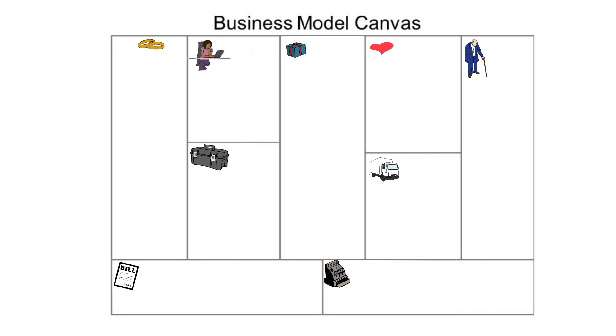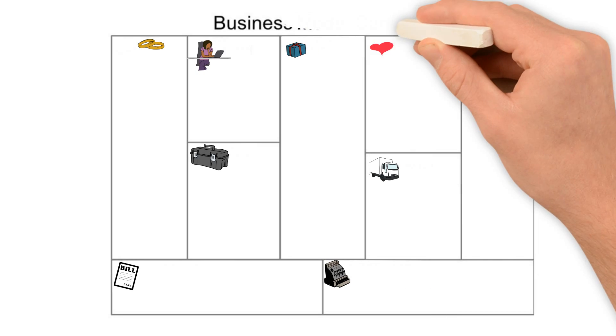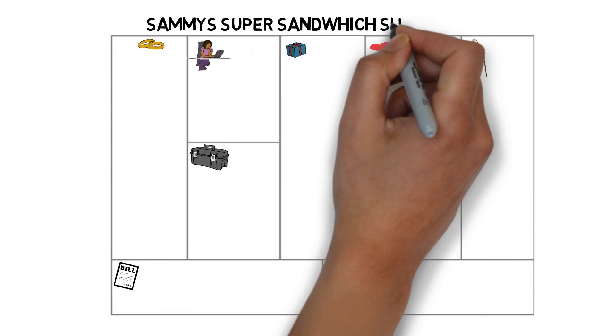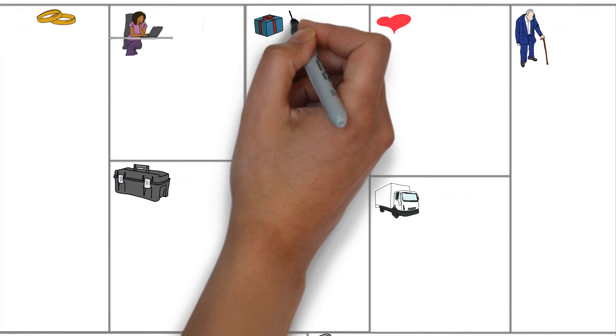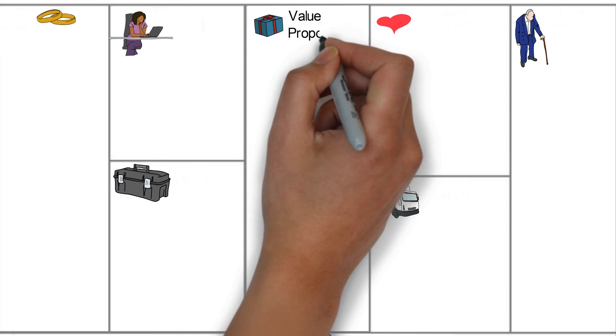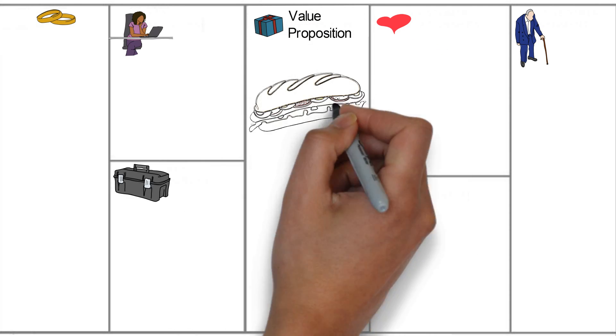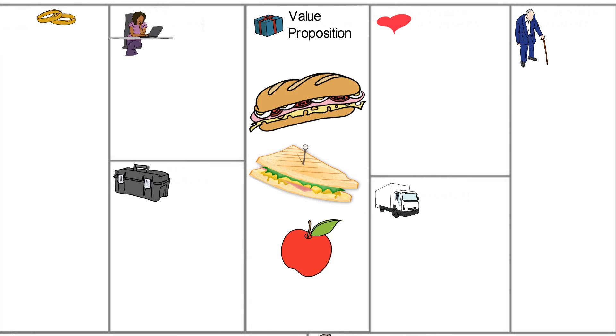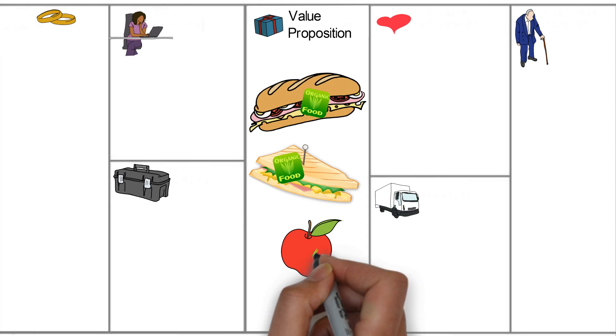Instead of going through something obscure like a tech business, let's just start with something simple like Sammy's super sandwich shop. Let's say Sammy is tired of eating at fast food joints because of their low quality food, so Sammy decides that this is what he wants to change and to provide people with great tasting organic sandwiches. This is Sammy's value proposition.